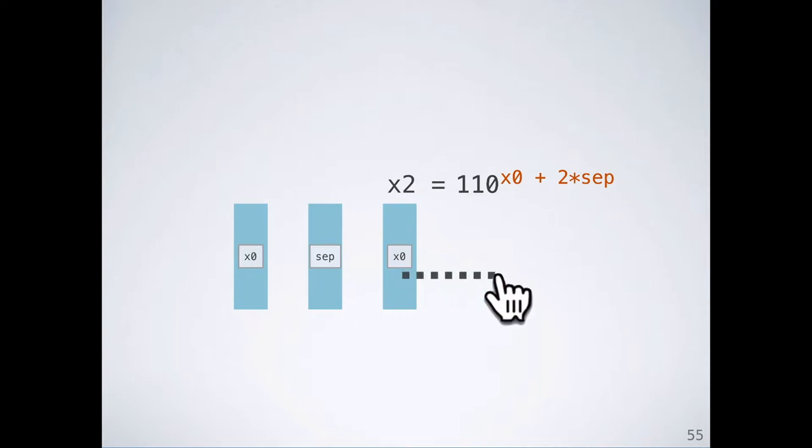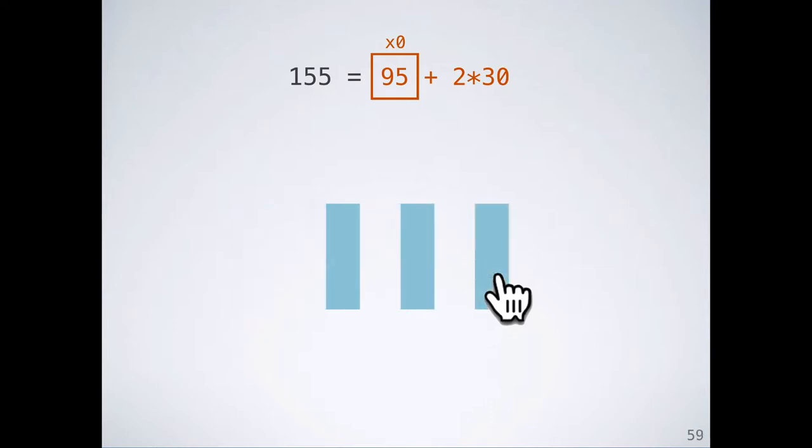When the user drags the third box, we set up an equation to solve. The right-hand side of this equation is derived from the trace. The left-hand side is the desired x position of the box, which we know by taking the initial x position and adding the distance the mouse moved. Now we have an equation to solve. The heuristic assigned x0 to change when we drag this third box, so x0 becomes the hole we solve for. Sep is replaced by its value. We solve this equation, producing a new value for x0. The system immediately reruns the program with this new x0 and renders the output.